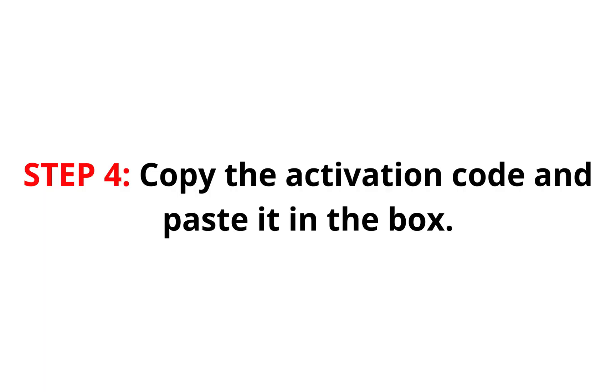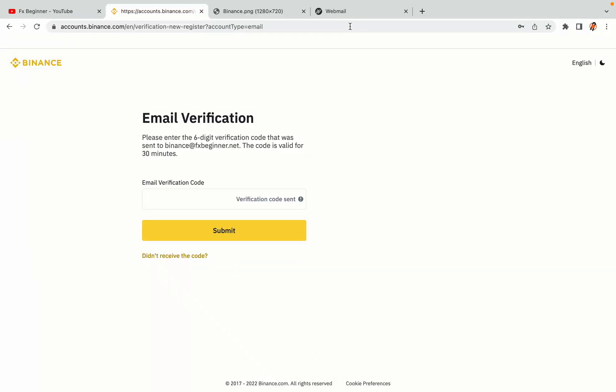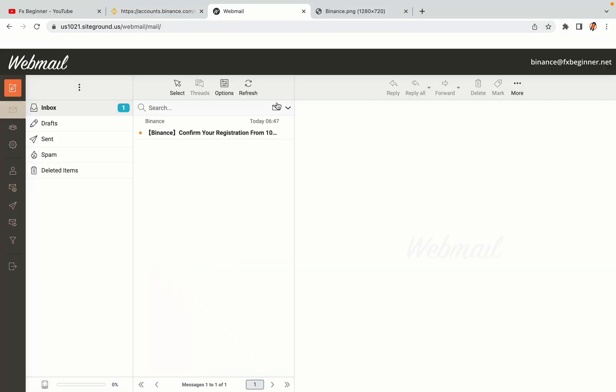Step 4: A confirmation code will be sent to your mail. Open your mail inbox, copy the code and paste it in the box to fully activate your Binance trading account.